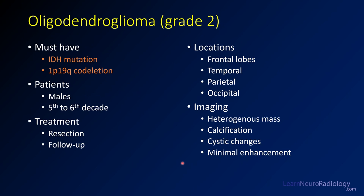This is a case of oligodendroglioma — this one happened to be grade 2. Oligodendrogliomas are now diagnosed molecularly over histologic features. These are brain tumors that require both an IDH mutation and a 1p19q codeletion. If not, and it's a primary glioma, it's classified as an astrocytoma.